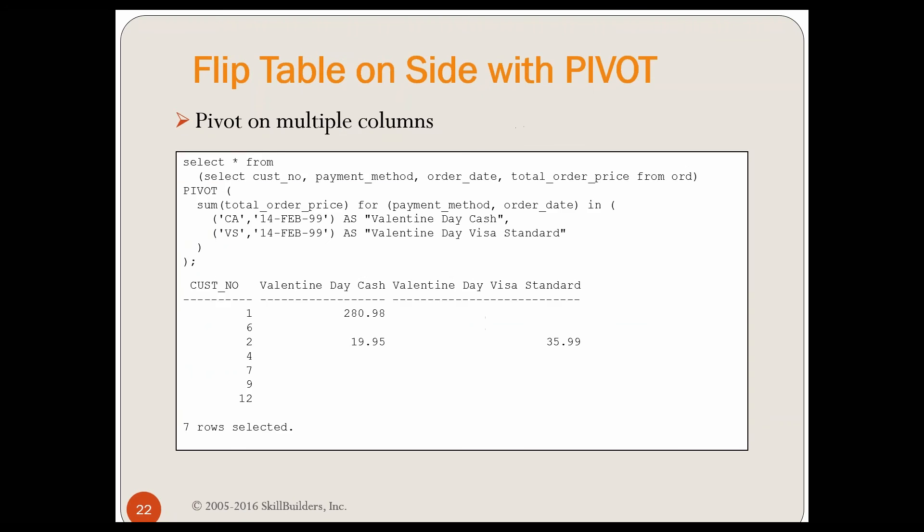But now what if we want to pivot on multiple columns, which is a little different? Now we're going to pivot on multiple columns. Before, I had multiple aggregate functions. Here I'm just doing one sum, but I could have done a sum and an average and whatever else I wanted. But now I'm going to pivot on two columns, the payment method, order date, and order date. What I'm going to do in my list is I have to give all payment method order date combinations that I want. So now I say for payment method order date in, cash February 14th, visa standard February 14th, and notice all I'm going to get is those values. All the rest of the values will be null. And I have a nice, I can name them properly. The cash for February 14th is Valentine Day cash. The visa standard for February 14th is Valentine Day visa standard. So I can pivot on multiple columns as well as doing aggregates on multiple columns.